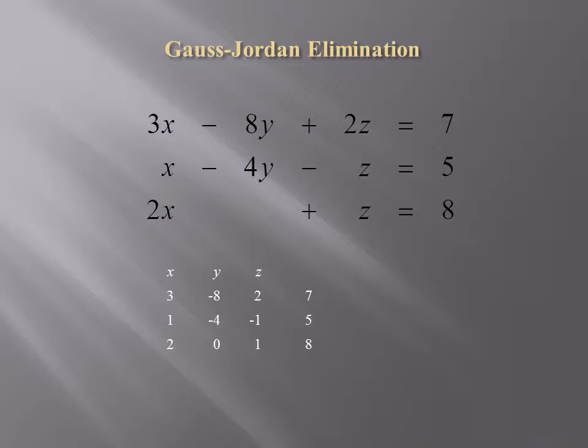We've eliminated the x, y, z and equal sign from each of the equations and created the matrix that you see. Keep in mind that the first row of that matrix — 3, negative 8, 2, 7 — corresponds to the equation 3 times x minus 8 times y plus 2 times z equals 7. And similarly for the second and third row of this matrix.